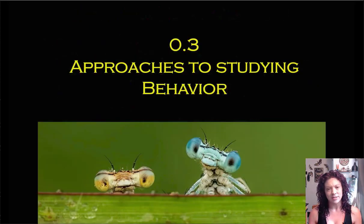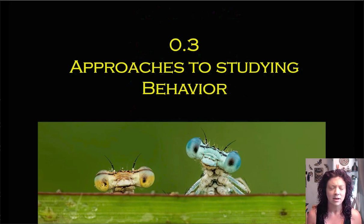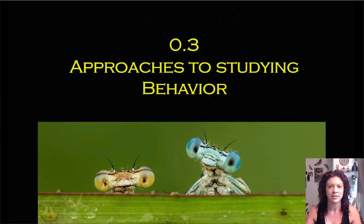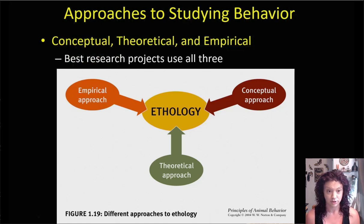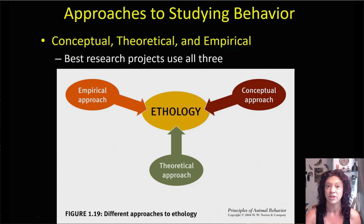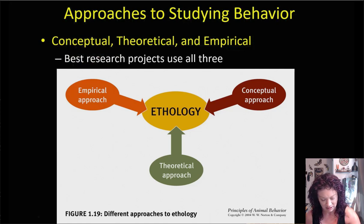There are also different scientific approaches to studying behavior — different ways to organize our understanding of the behaviors we're seeing. The three major approaches are a conceptual approach, a theoretical approach, or an empirical approach. The very best research projects actually use all three. All three of them contribute to what we consider to be the study of ethology.